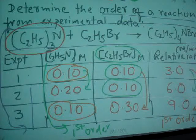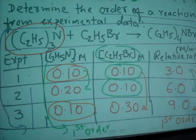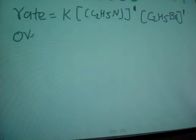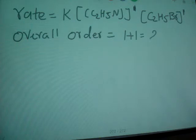So when you write reaction rate law, then we can write, I'm going to go to next page. We can write rate equals K times C2H5N concentration, and this is the first order, and then C2H5Br, and it's first order. Now what's the overall order? Overall order of this reaction is 1 plus 1, which is going to be 2.